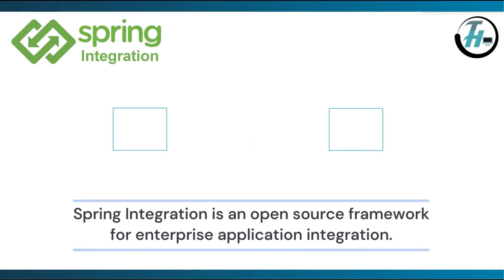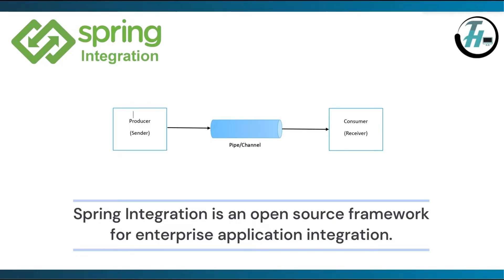Let's understand how it works. Say, we have a producer or sender and a consumer or receiver. Now, we have a pipe which acts as a channel between the two. Producer and consumer are also called as message endpoints, and the message goes from producer to consumer through the channel.